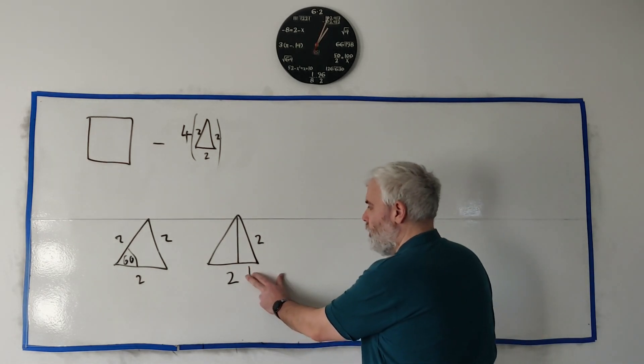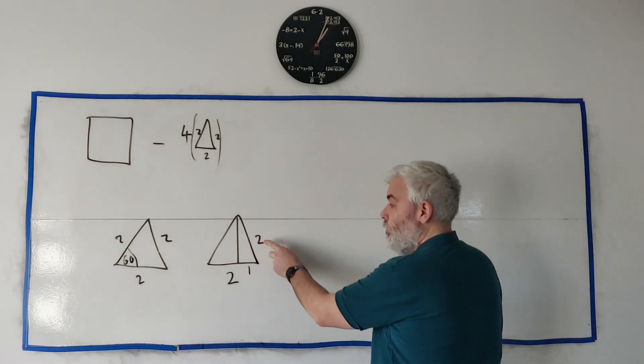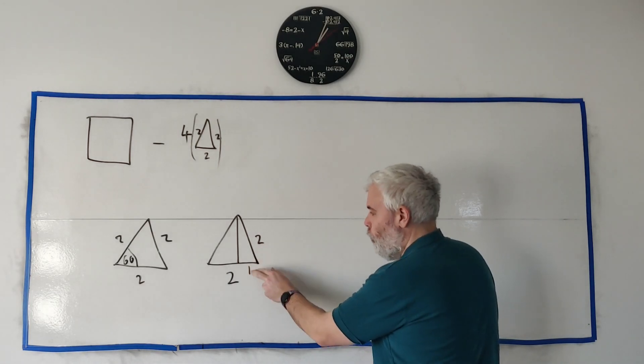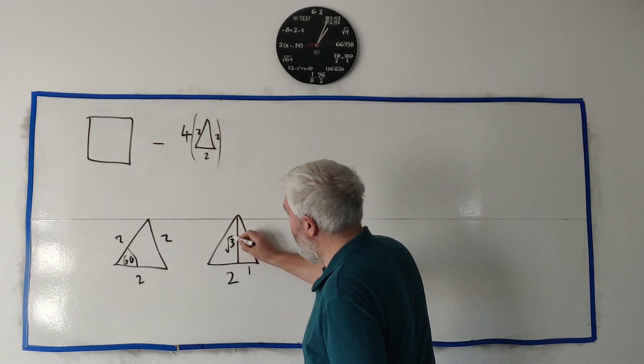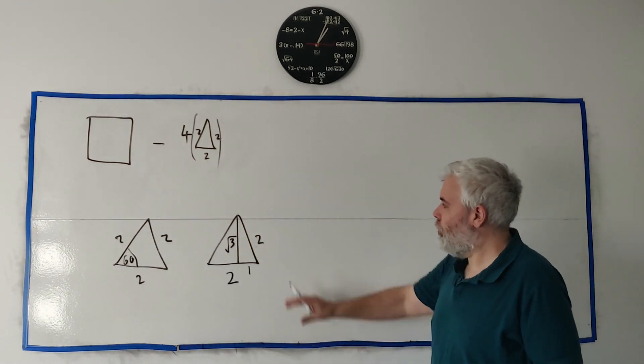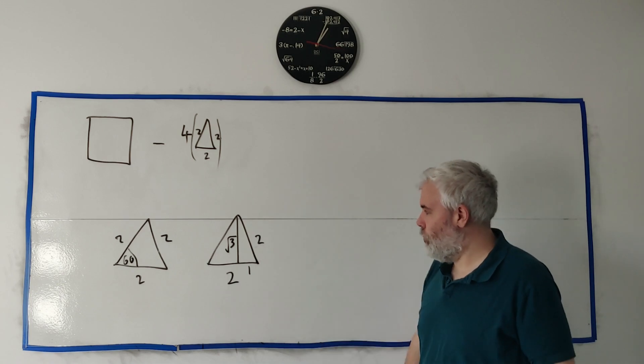That's one squared plus something squared equals two squared. So that's one plus something equals four. So it must be three here, or square root of three. So the height of this triangle is the square root of three.